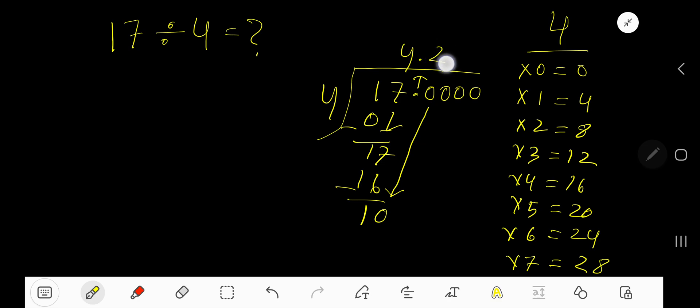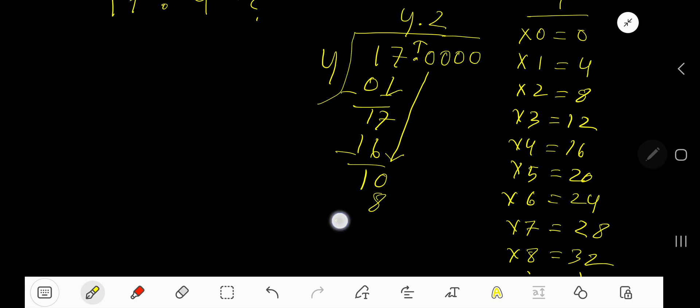4 goes into 20 how many times? 5 times. 5 times 4 is 20. Subtract. 20 minus 20 is 0. Our answer is 4.25.